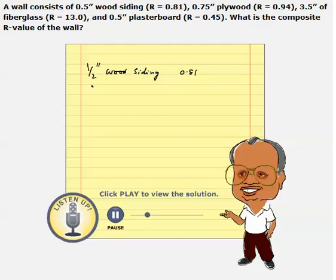And we have 3/4-inch plywood, and this plywood's R value is also given as 0.94.